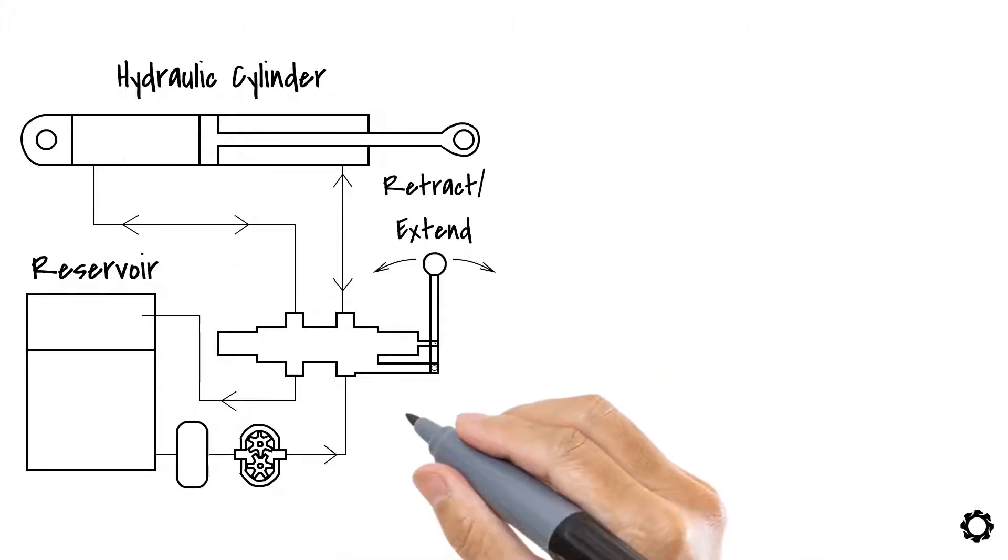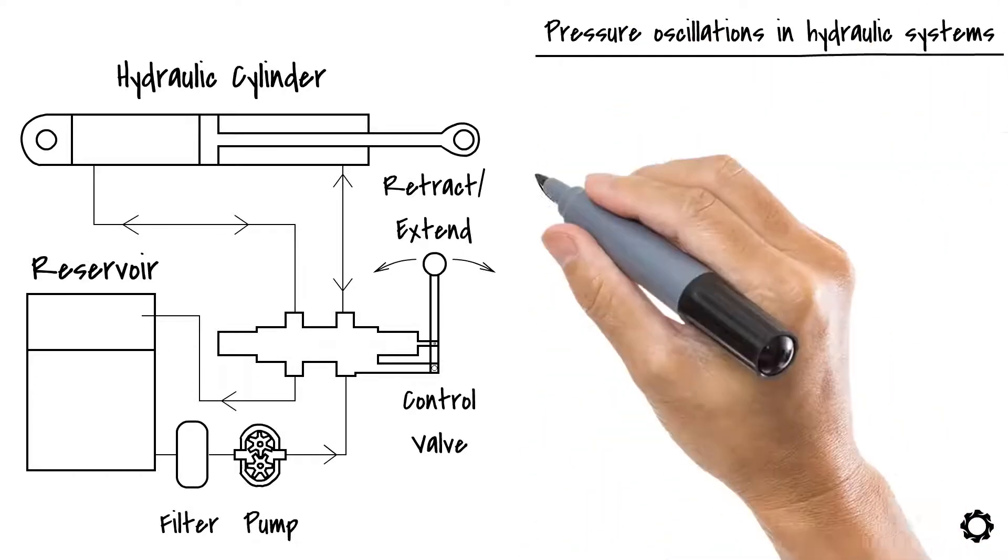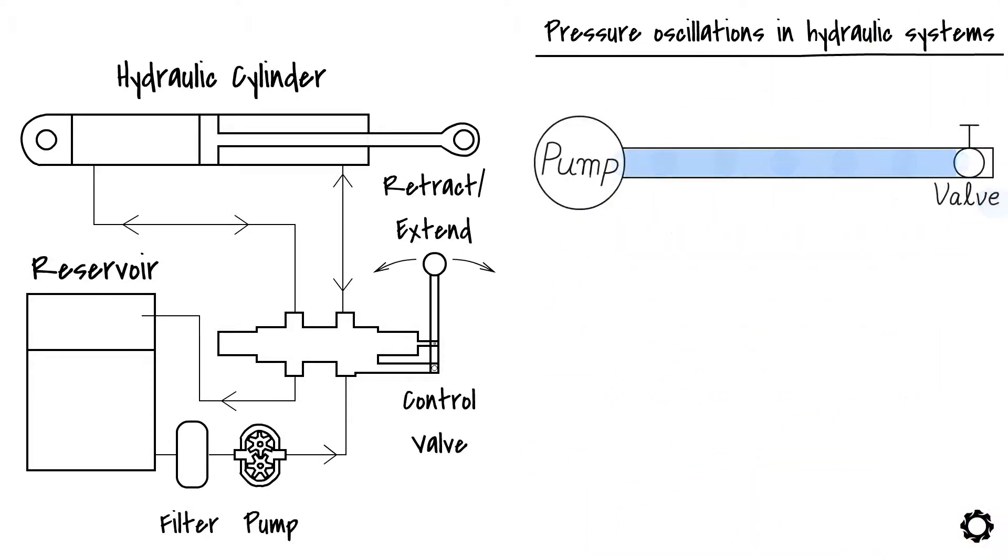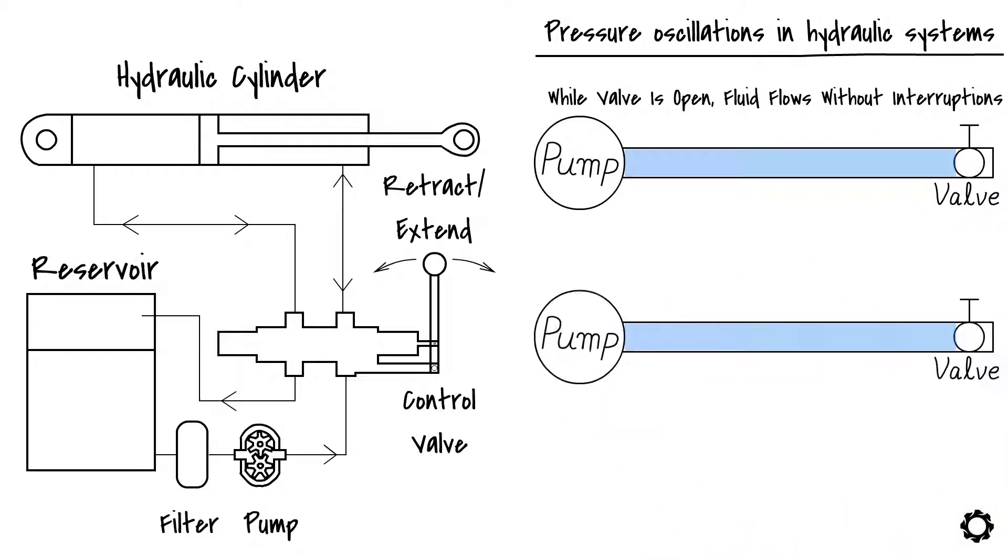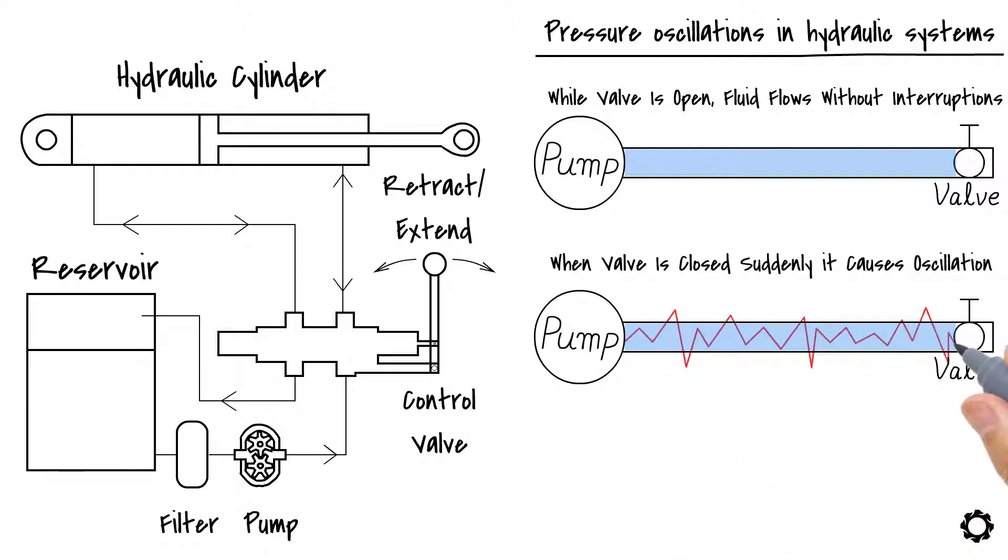One such example from our mechanical engineering field could be pressure oscillations in hydraulic systems. These oscillations are usually caused when the hydraulic valve is closed too quickly that creates a hydraulic shock wave in the system which can be harmful to several components if the oscillation energy is not dissipated somewhere.